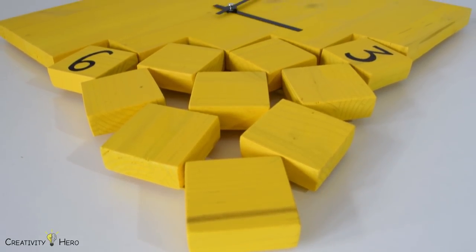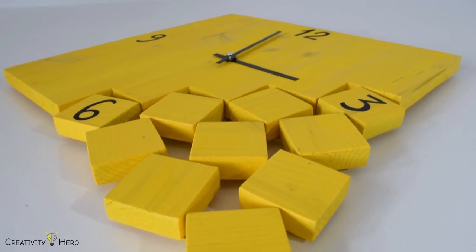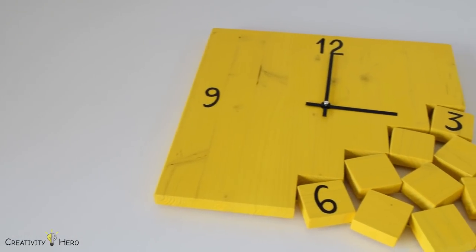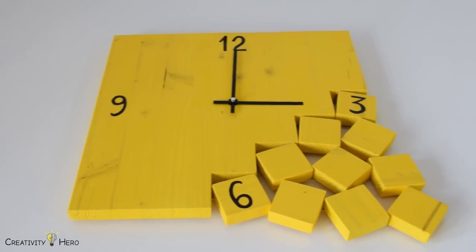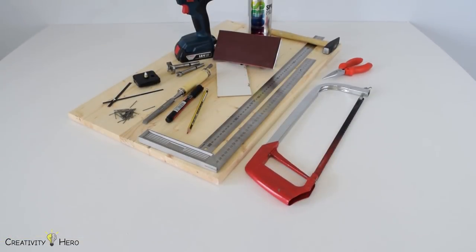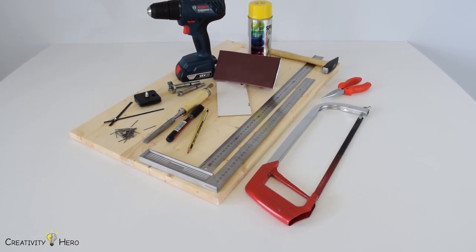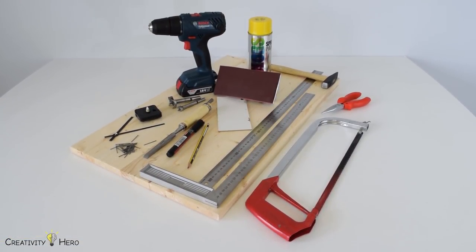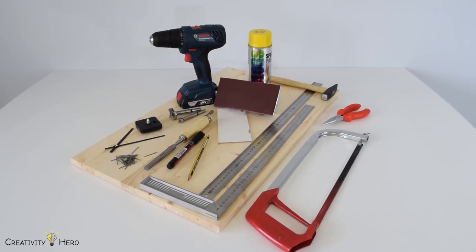In this video I'm going to show you how to make this modern-looking wooden wall clock. The design is very simple and all you need is a wood panel, a piece of plywood, a clock mechanism and some basic woodworking tools.